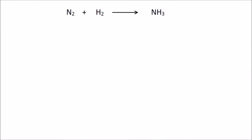So let's look at this next reaction. This is nitrogen gas and hydrogen gas reacting together and producing ammonia. Technically this is a reversible reaction, but we don't need to worry about that — we're just trying to balance it, so I've put a normal arrow there. Let's have a look at what we have here.